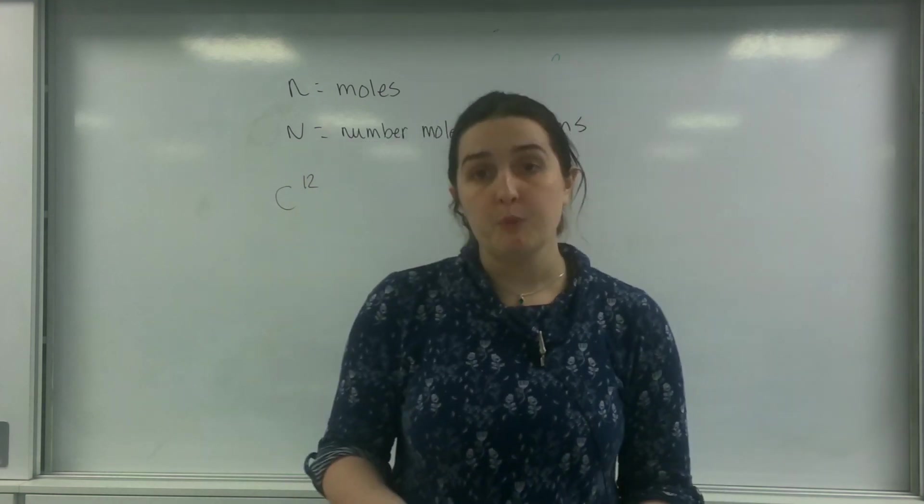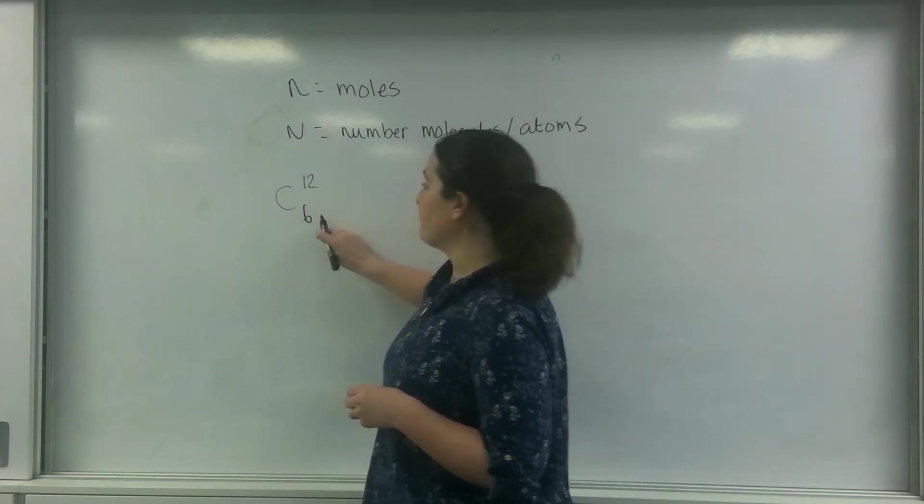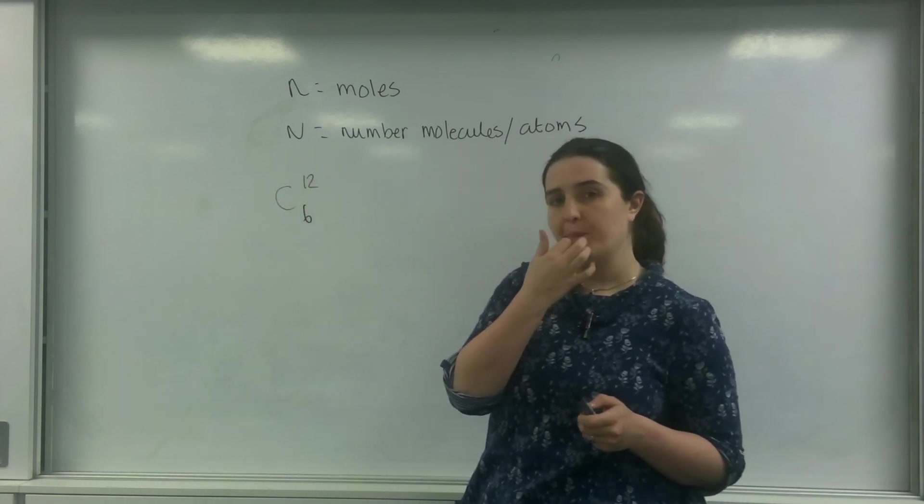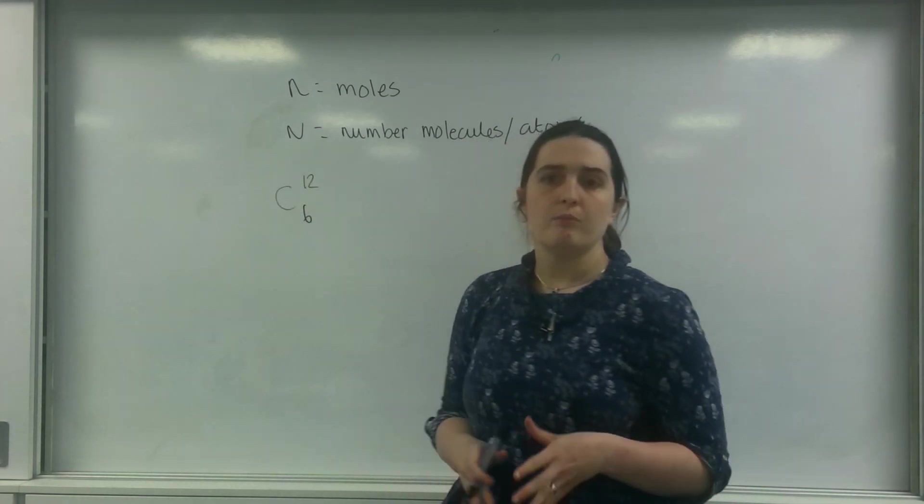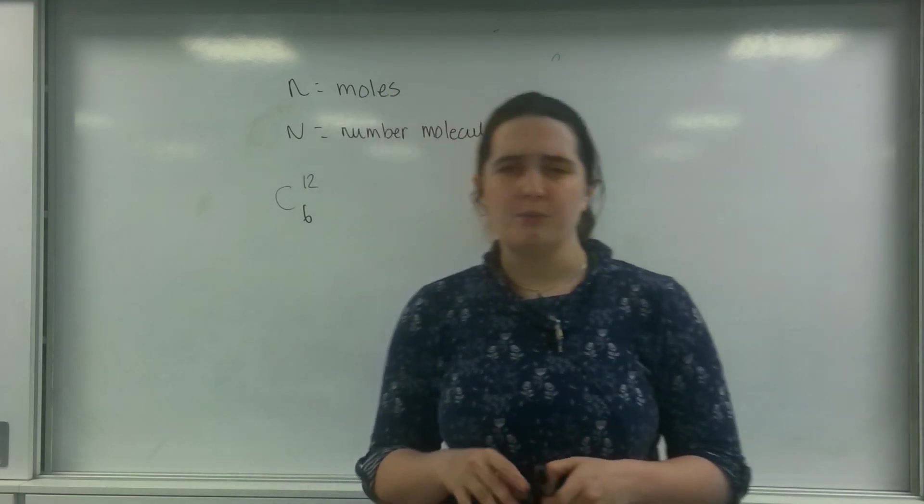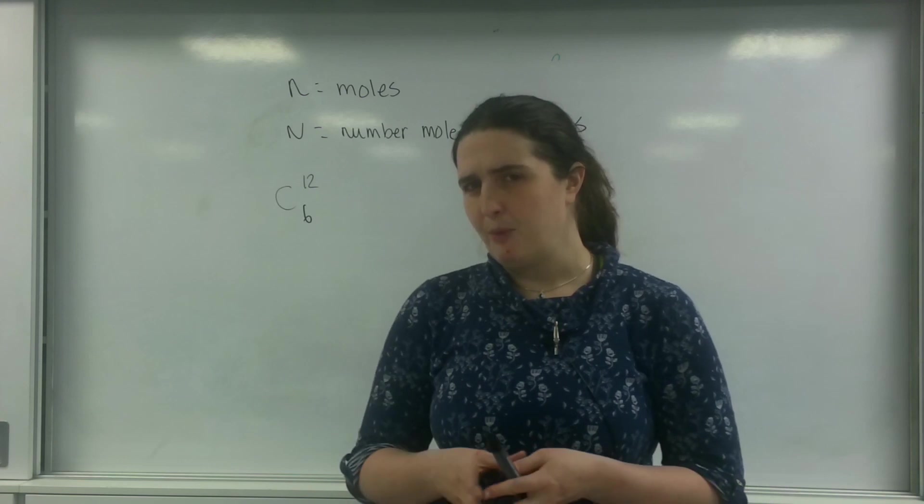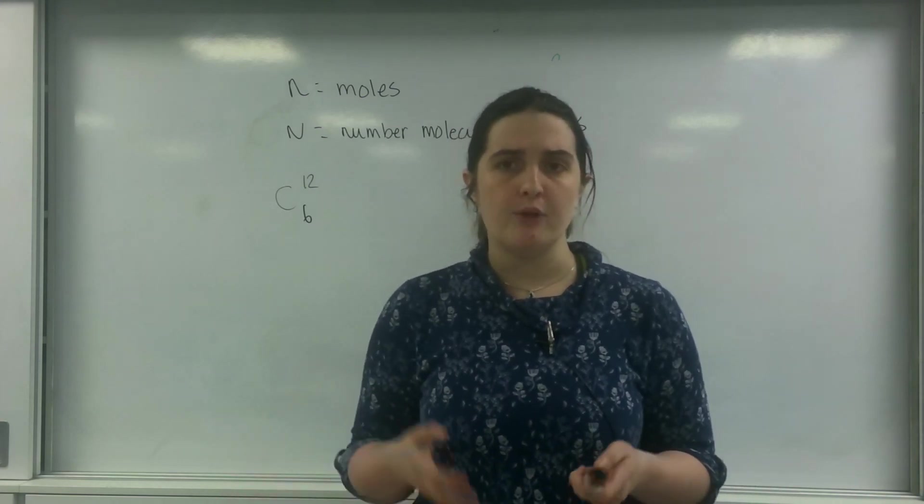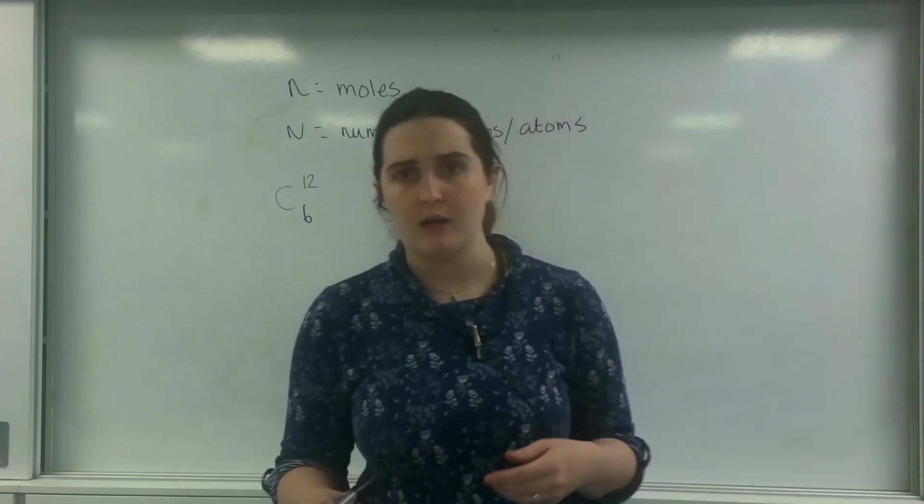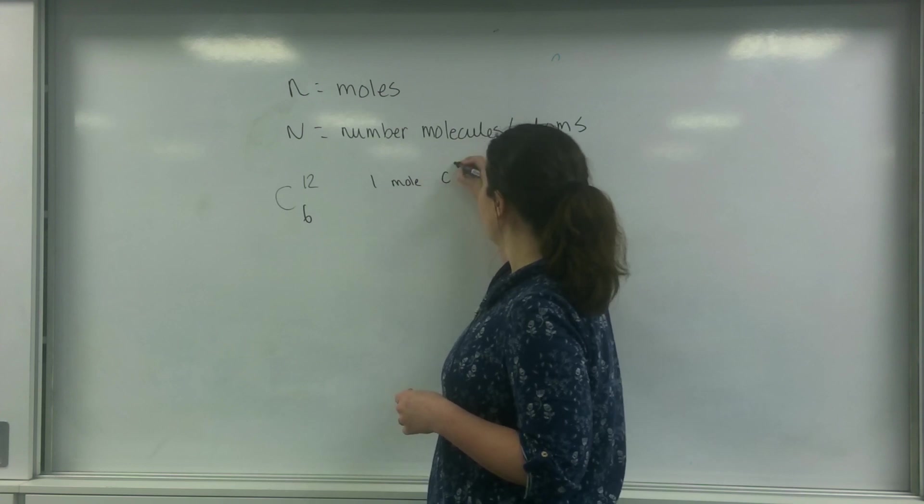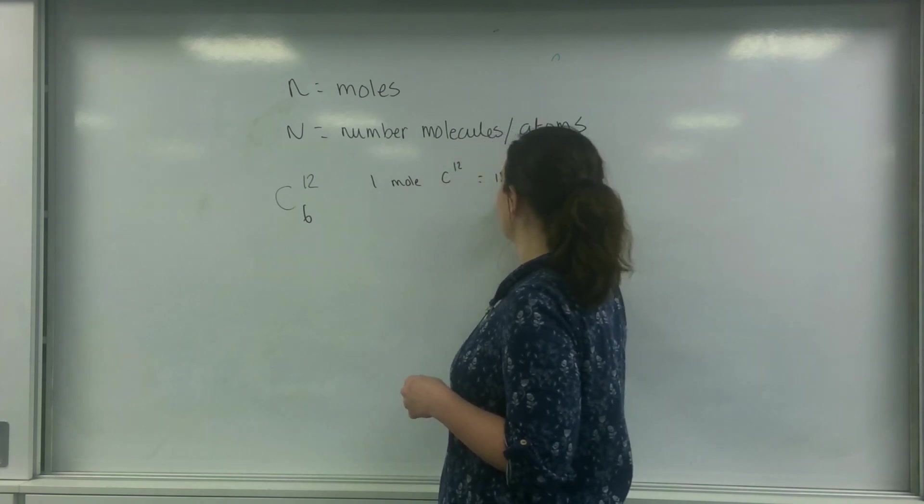So carbon 12 has 6 protons and 6 neutrons and has an atomic mass number of 12. He then got 12 grams of the stuff and we knew a little about atomic radii at that point, and he estimated how many atoms of carbon was in 12 grams of carbon 12. So one mole of carbon 12 is 12 grams.